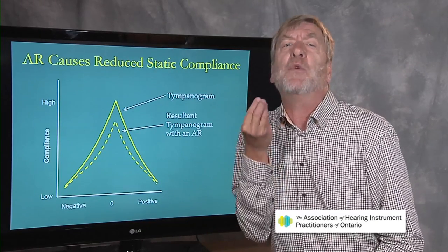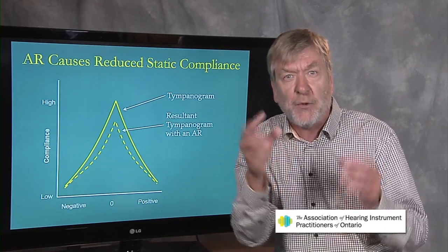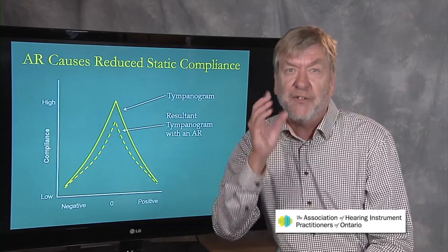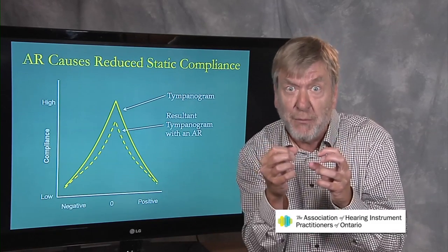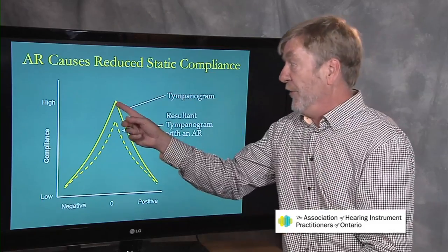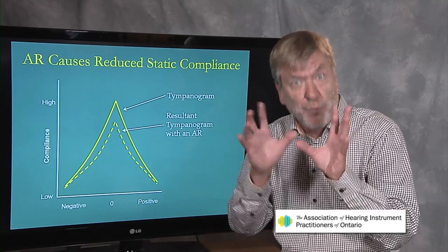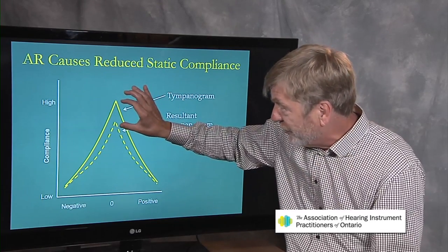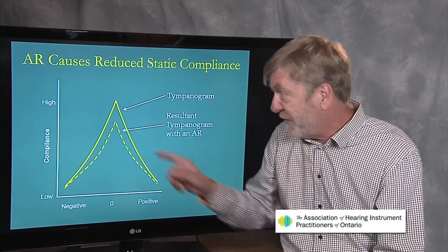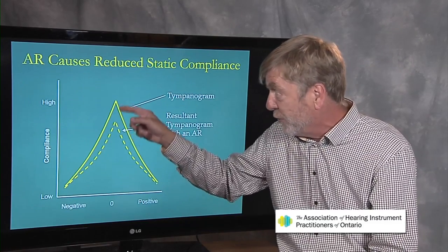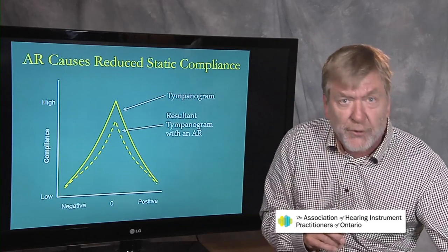Acoustic reflexes are tested at the air pressure that yielded the tallest tympanogram — maximum compliance. That air pressure is fixed, and now a loud sound is put into the ear. We want to find out: did that loud sound cause an acoustic reflex? If it did, that would stiffen the middle ear system even more, causing a reduction in compliance. So an acoustic reflex on a tympanogram is shown as a reduction in the height of the tympanogram — this reduction in compliance.